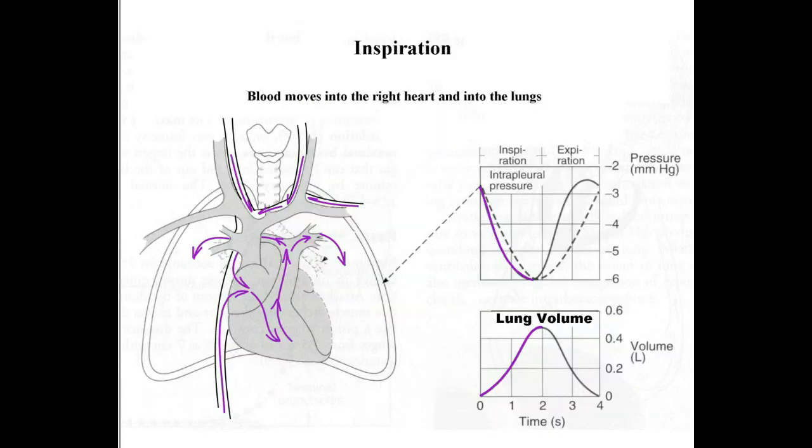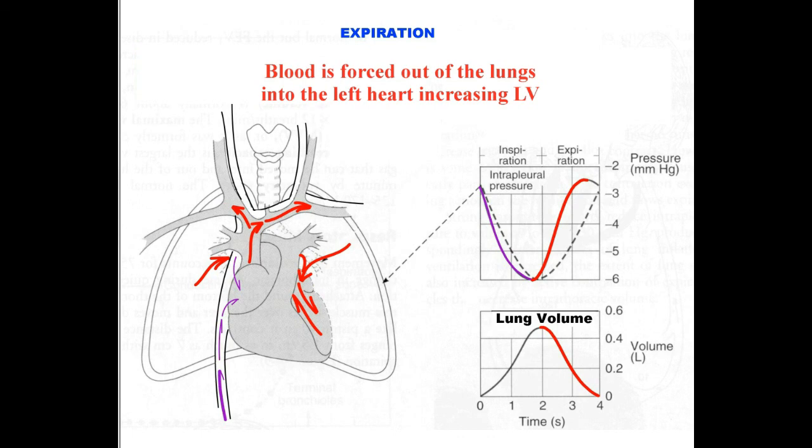During inspiration, blood is pulled into the lungs and into the right ventricle. With forceful expiration, blood is literally squeezed out of the lungs and pushed into the left ventricle, thus improving cardiac performance.